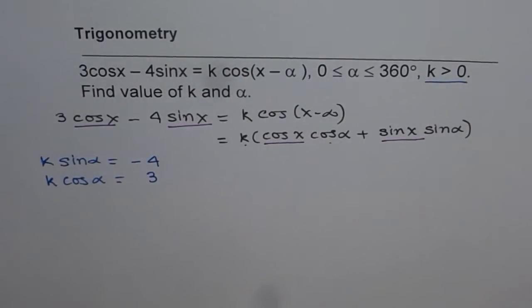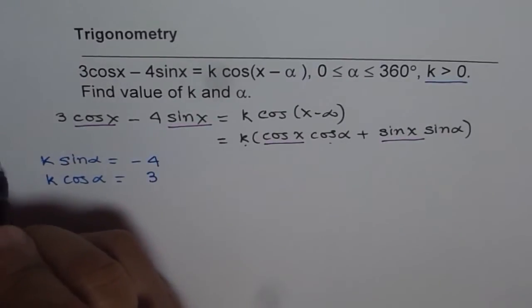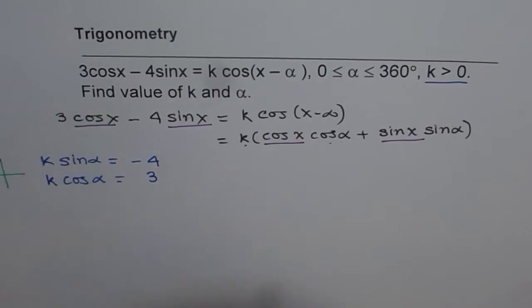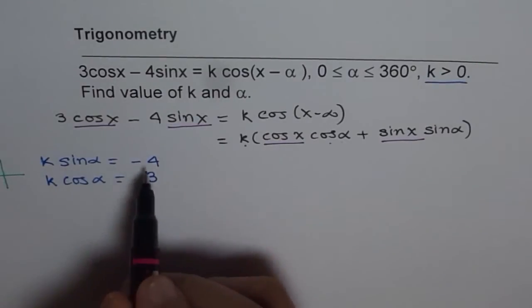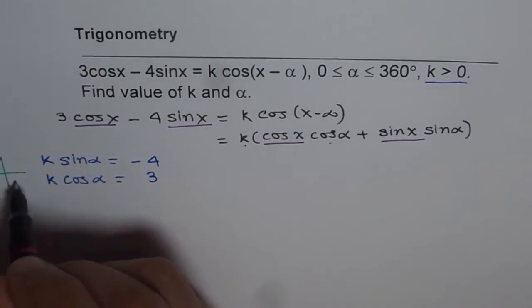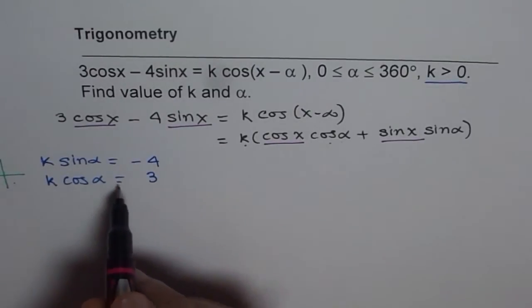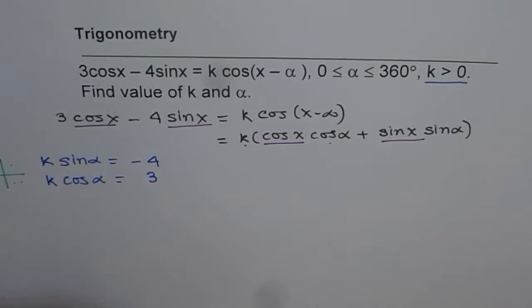Now when is that possible? That is possible if we are considering which quadrant. Sine is negative in these two, and cos is positive in these two. So we are talking about quadrant 4, correct? So remember that part. In quadrant 4, sine is negative and cosine is positive.